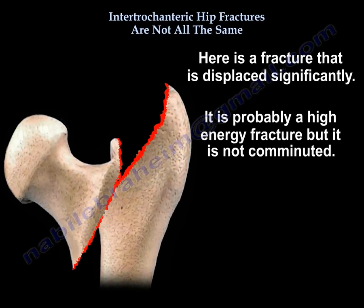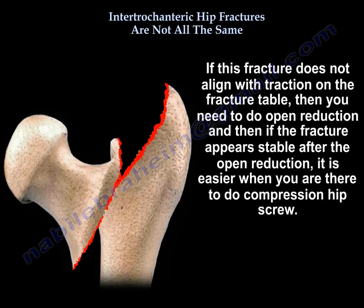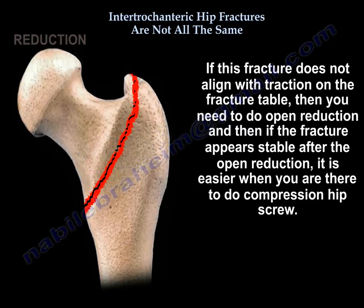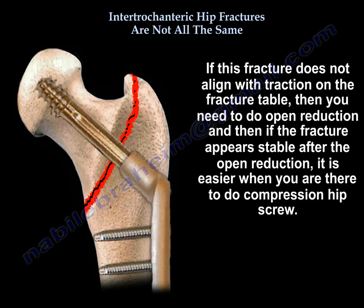Here is a fracture that is significantly displaced. It is probably high energy, but it is not comminuted. If this fracture does not align with traction on the fracture table, then you will need to do open reduction. If the fracture appears stable after the open reduction, it is easier when you are there to do a compression hip screw.